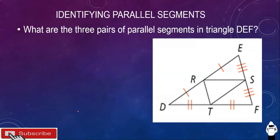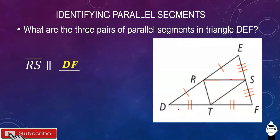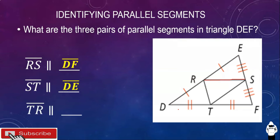Let's identify parallel segments given triangle DEF. What are the three pairs of parallel segments in triangle DEF? Segment RS is parallel to segment DF. Segment ST is parallel to segment DE. And segment TR is parallel to segment EF.